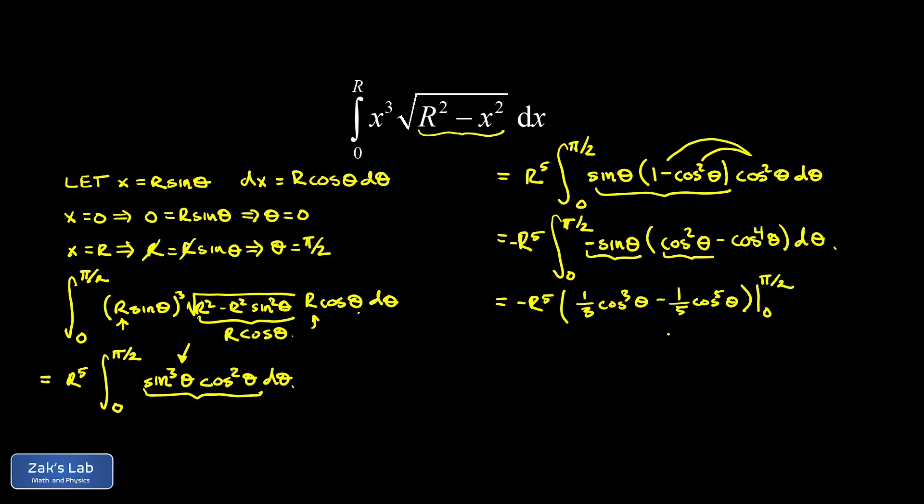And just to linger on this chain rule backwards issue for just a second, if I imagine taking the derivative of this first term, one-third cosine cubed theta, you differentiate with respect to the interior function. So you bring down the three, canceling that one-third, and you would end up with cosine squared theta. But then the chain rule says you have to multiply by the derivative of cosine, which was tacked right onto that term as a negative sine theta. So we're just seeing that process backwards by looking for that derivative of the interior function, which was negative sine theta in our case.